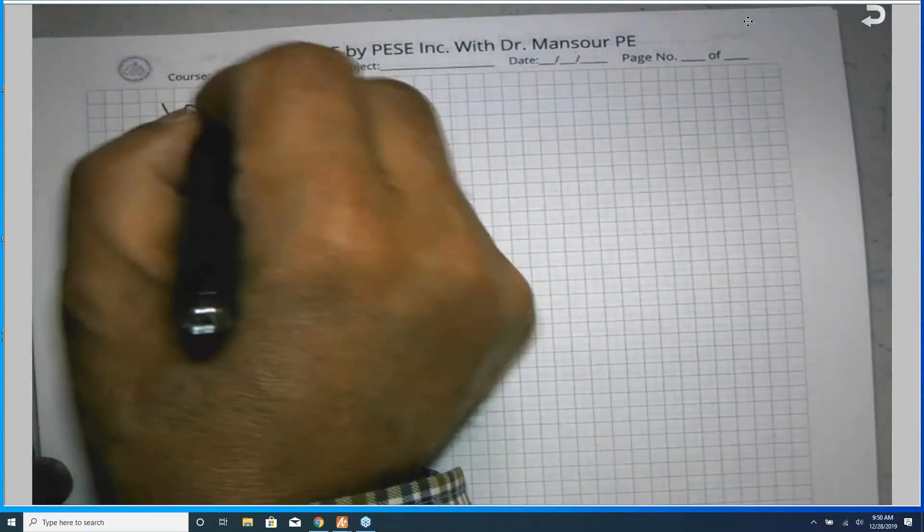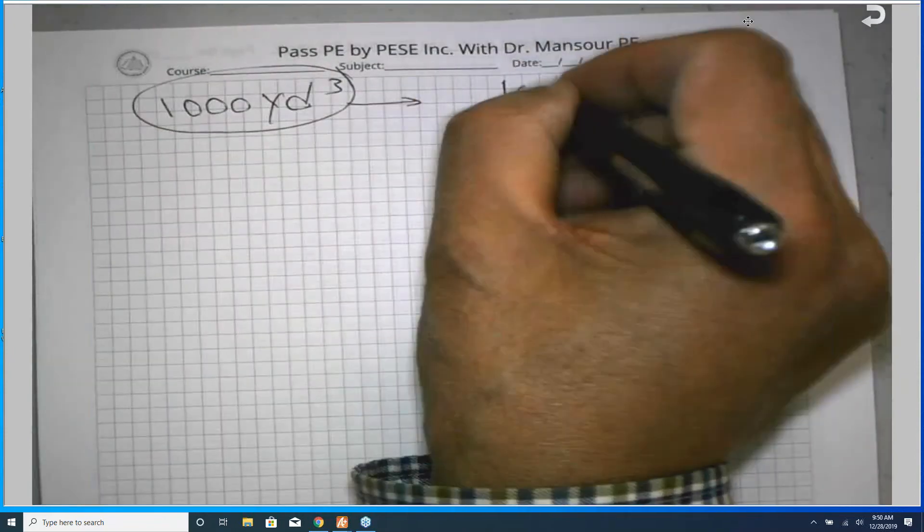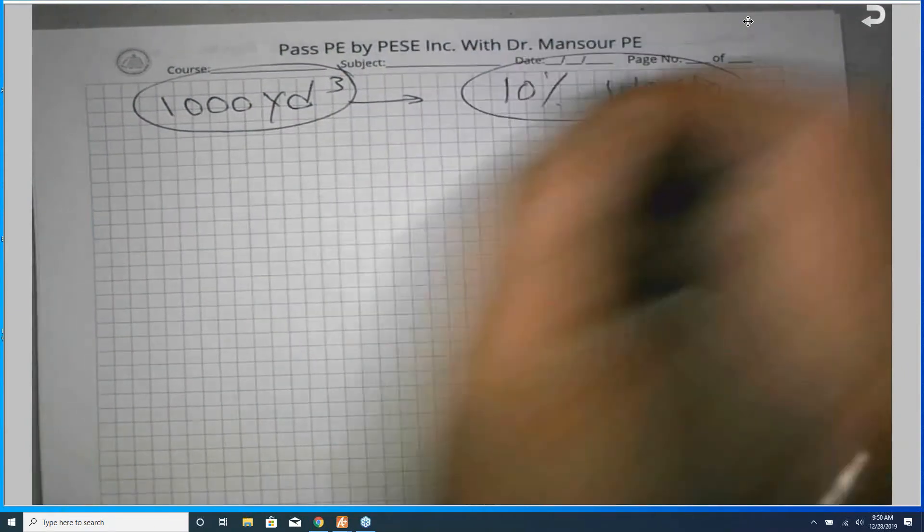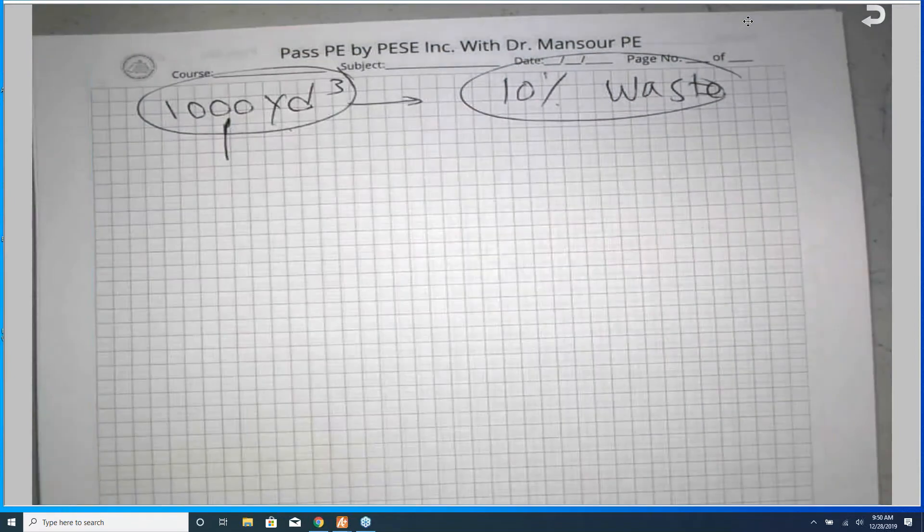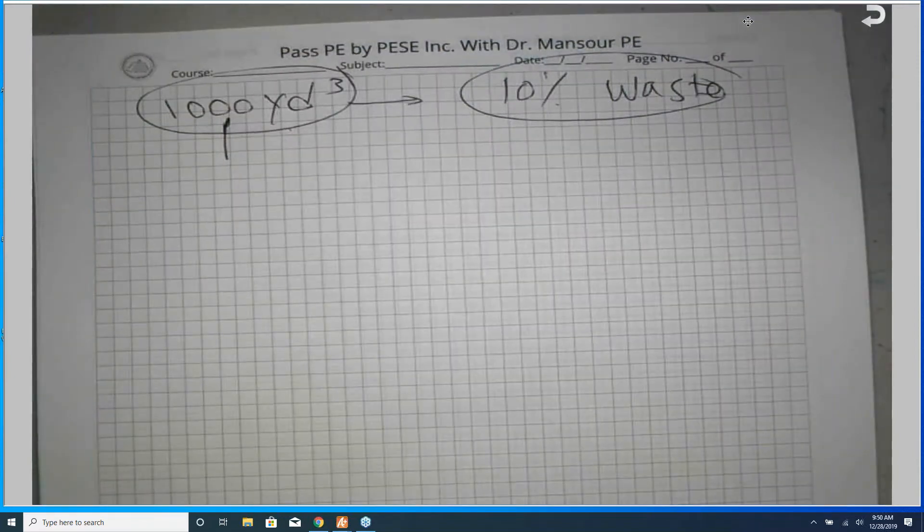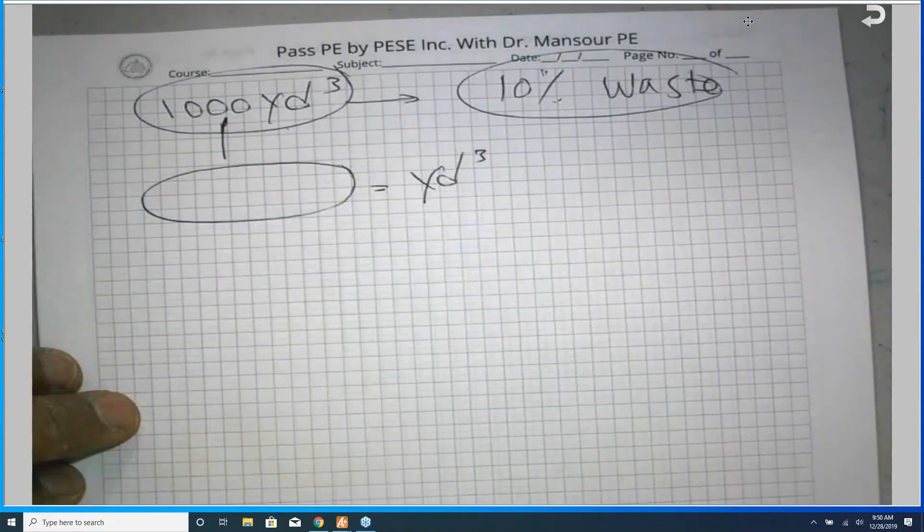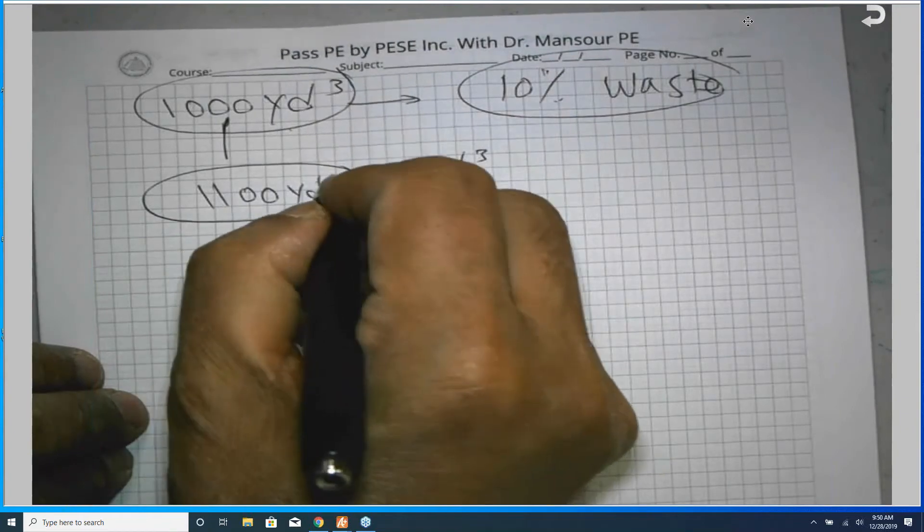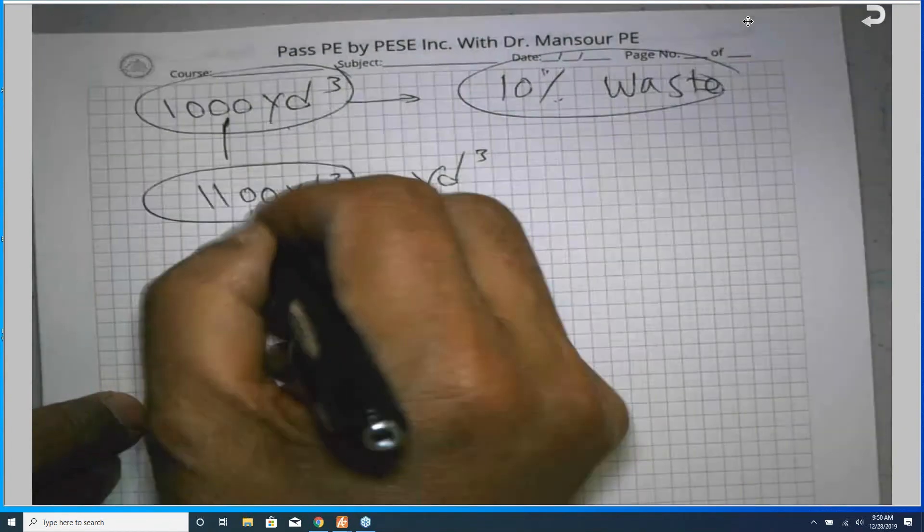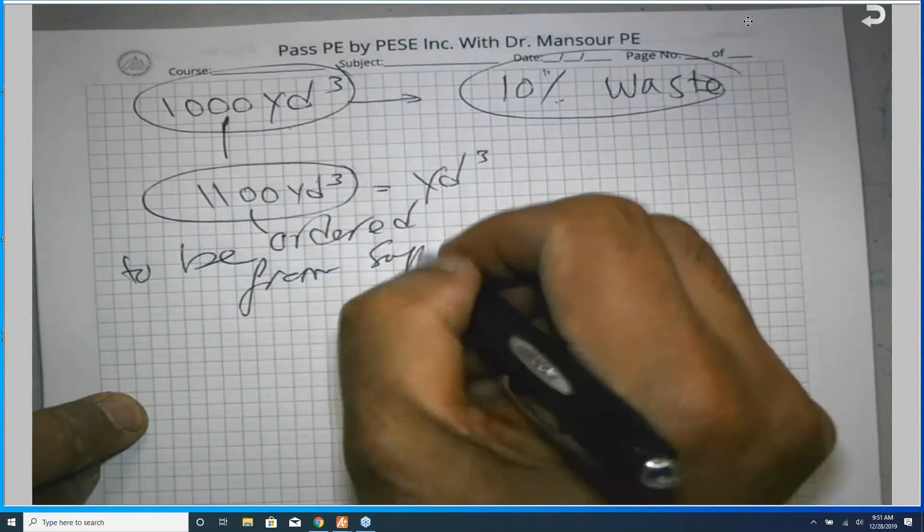I will answer you, my friend. If I have 1,000 cubic yards required for a job based on my volume computations, and if I have 10% waste, I'm asking you right now: I calculated the exact volume I need to be in place is 1,000 cubic yards, but I'm expecting some waste and decided to go with 10% waste. How many cubic yards do I need to require from the concrete supplier? This is what I need you to calculate for me. This is to be ordered from the supplier.